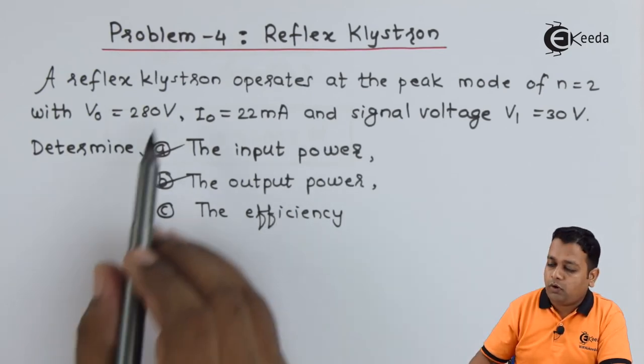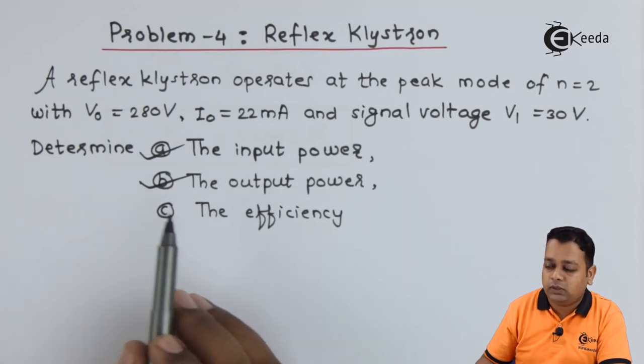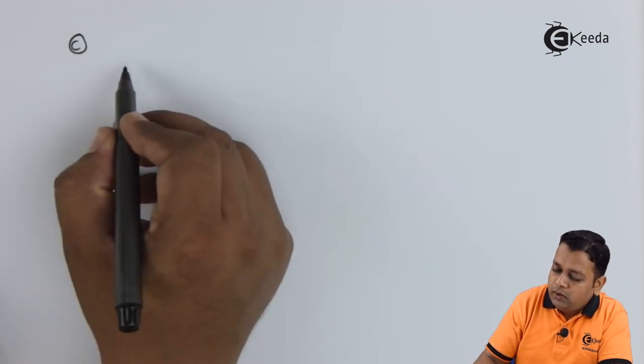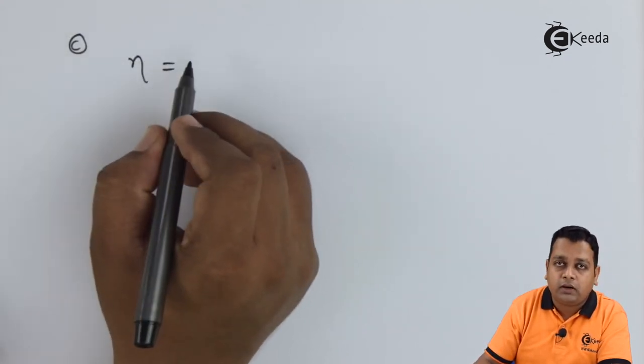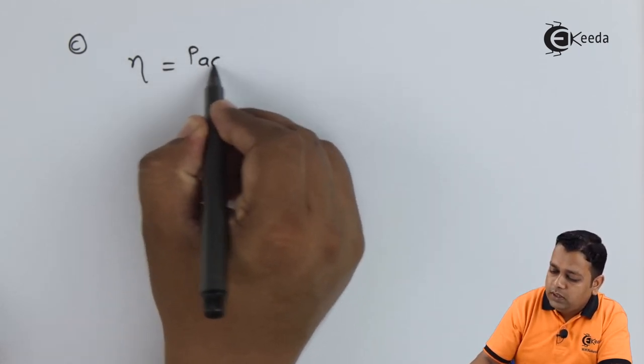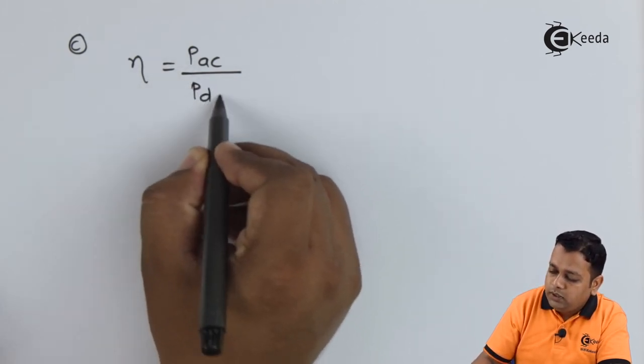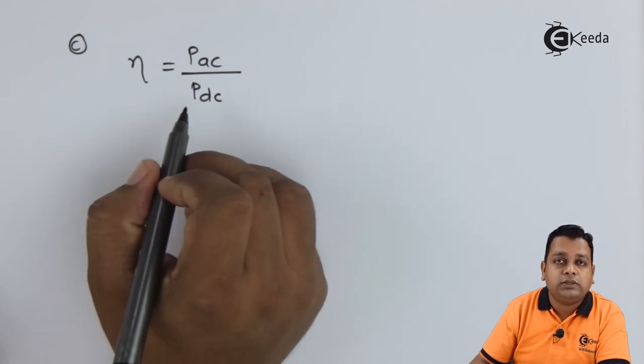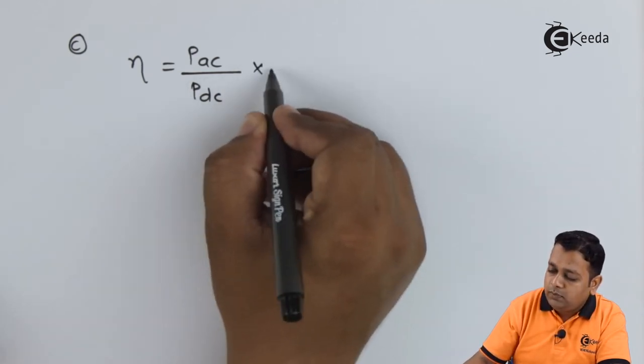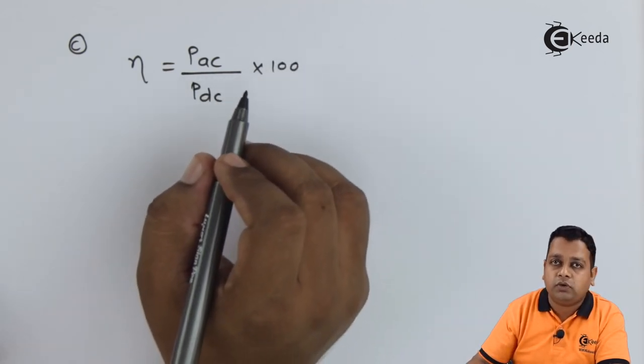Now the last part for the problem number four of reflex klystron that is also the last one we require to calculate the efficiency. Now as in the previous both portions a and b we have computed the input power and output power with respect to the reflex klystron our device we can simply calculate the efficiency by using the ratio. Therefore for part c I denote efficiency by η and write the simple equation that is P_ac that is the output power answer of the part b can be utilized here divided by P_DC that is the input power the answer of part a can be utilized here in multiplication to 100 so that efficiency will be in terms of percentage.